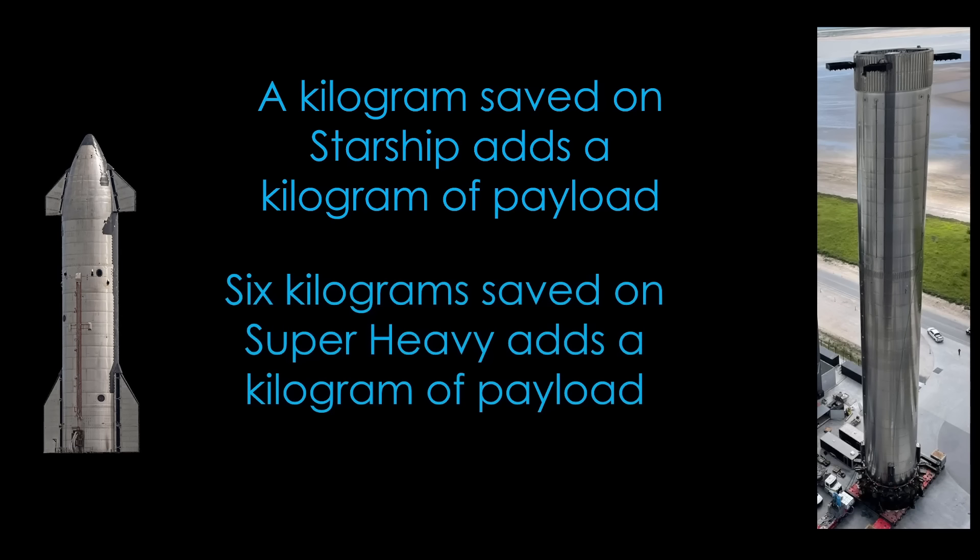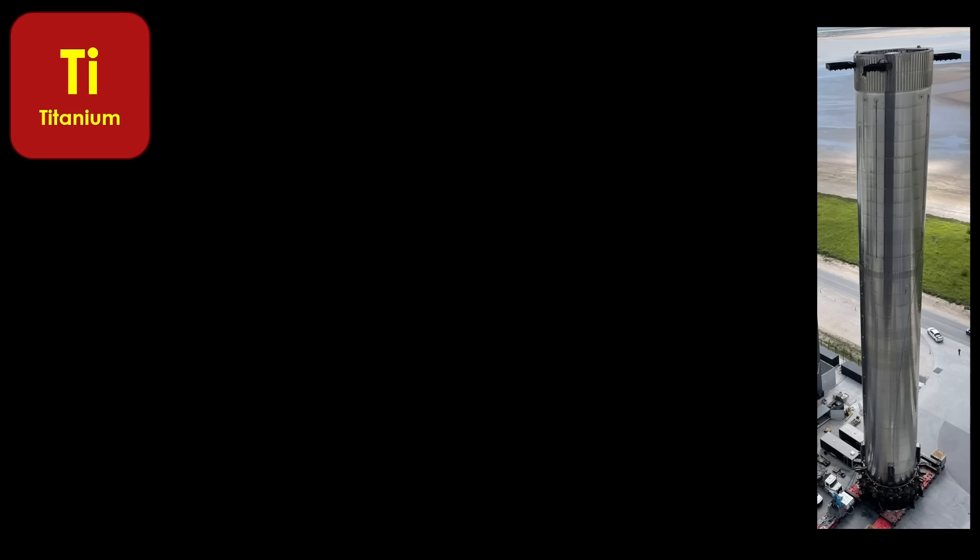As a rule of thumb, you need to save about six kilograms of mass on the first stage to add a kilogram of payload to orbit. That makes lighter materials much less interesting for first stages, but it's still worth looking at. For titanium, I see very little reason you would want to build a booster out of titanium. It's a lot of extra money and hassle for what would probably be small gains.